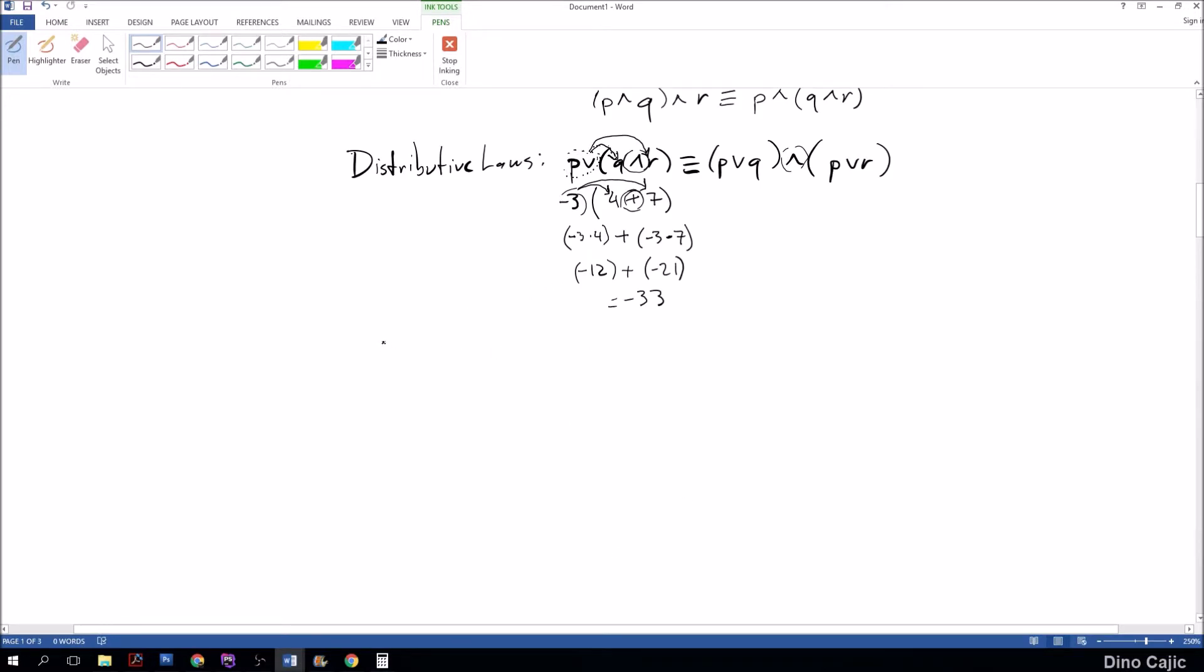Distributive law also states that P and (Q or R) is logically equivalent to (P and Q) or (P and R). Again, same concept. The only difference is we swap the symbols. So the P had the or and the Q and R had the conjunction.